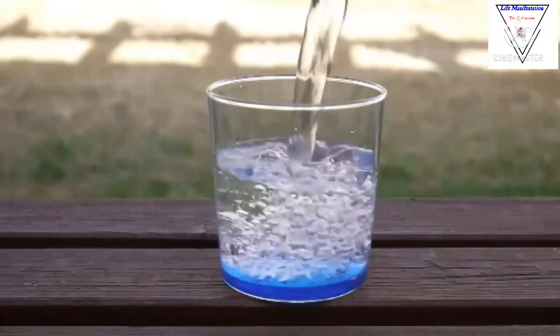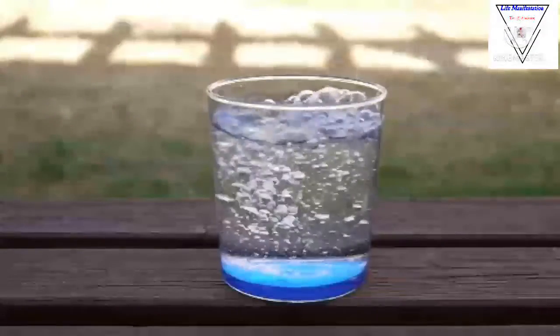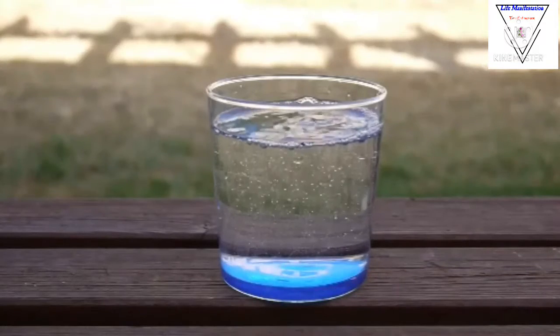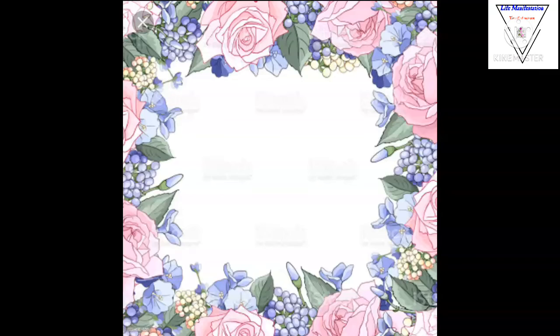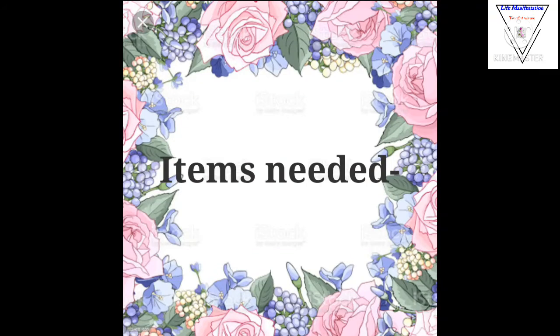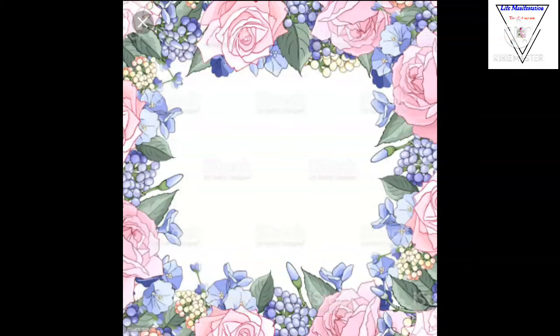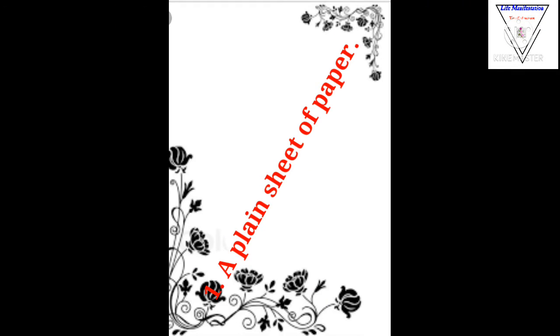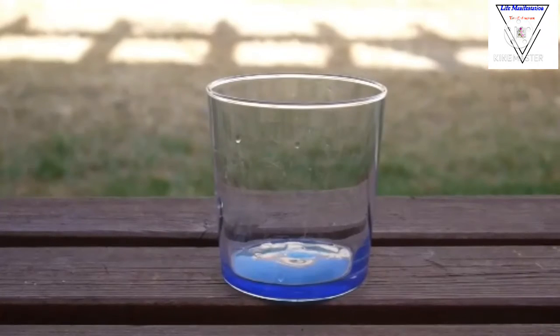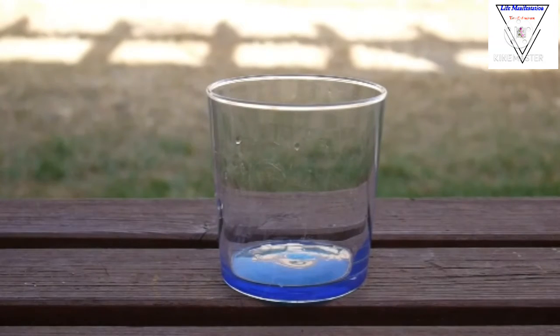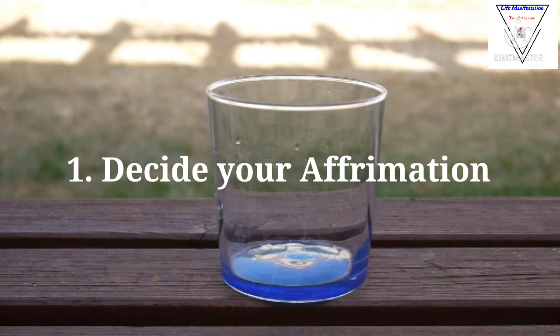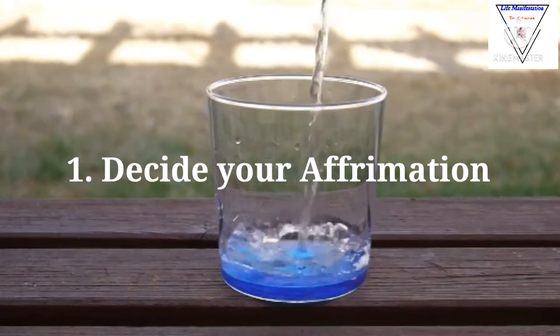The items needed for the water technique are a plain sheet of paper and a glass of water. Now we can see the steps of the water technique. First, decide your affirmation. Write down your wish in the form of an affirmation on paper.